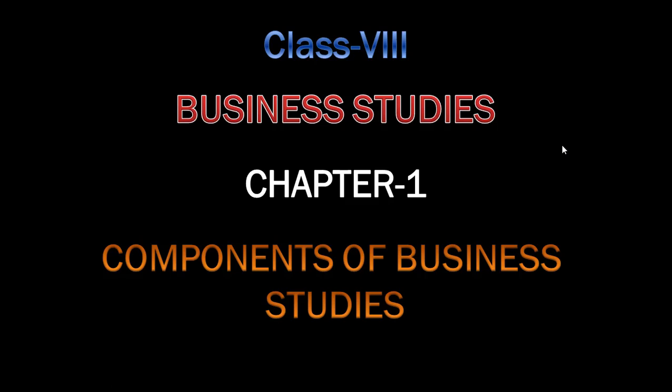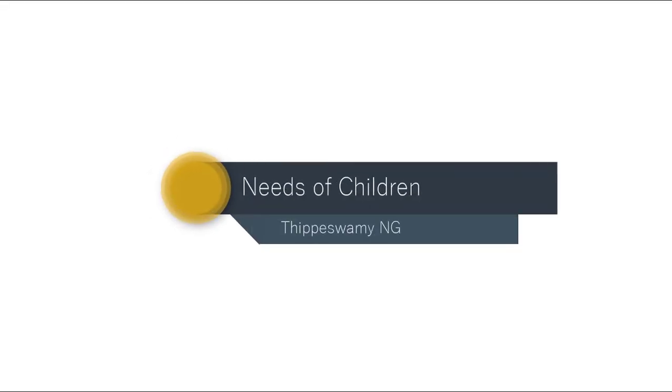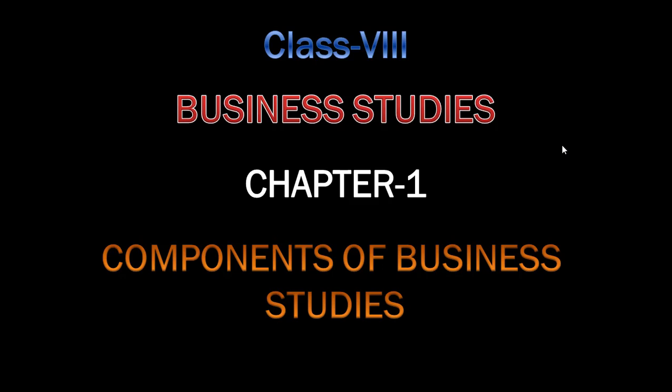Hi, hello, namaste! Welcome back to Needs of Children. In this session we are going to get information about 8th standard Social Science English medium Business Studies, chapter one — continued part of components of business studies. In the previous session we got information about the introduction to the lesson: economic activities, types of economic activities, the concept of exchange, evolution and growth of commerce — including the hunting and fishing stage, pastoral stage, agricultural stage, and handicraft stage.